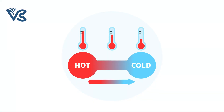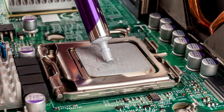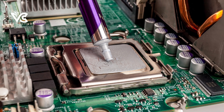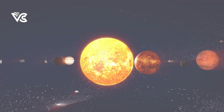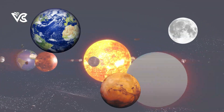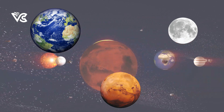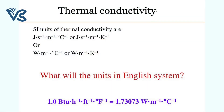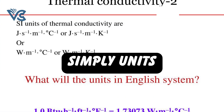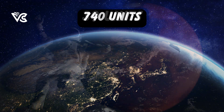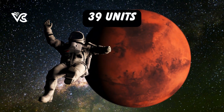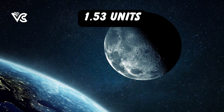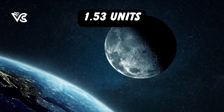A material with good thermal conductivity allows heat energy to flow quickly through it. We have data on thermal conductivity for three celestial bodies: Earth, Moon, and Mars. For simplicity, we shall express it in units of conductivity. For Earth it's 740 units, for Mars it's 39 units, whereas for the Moon it's only 1.53 units.